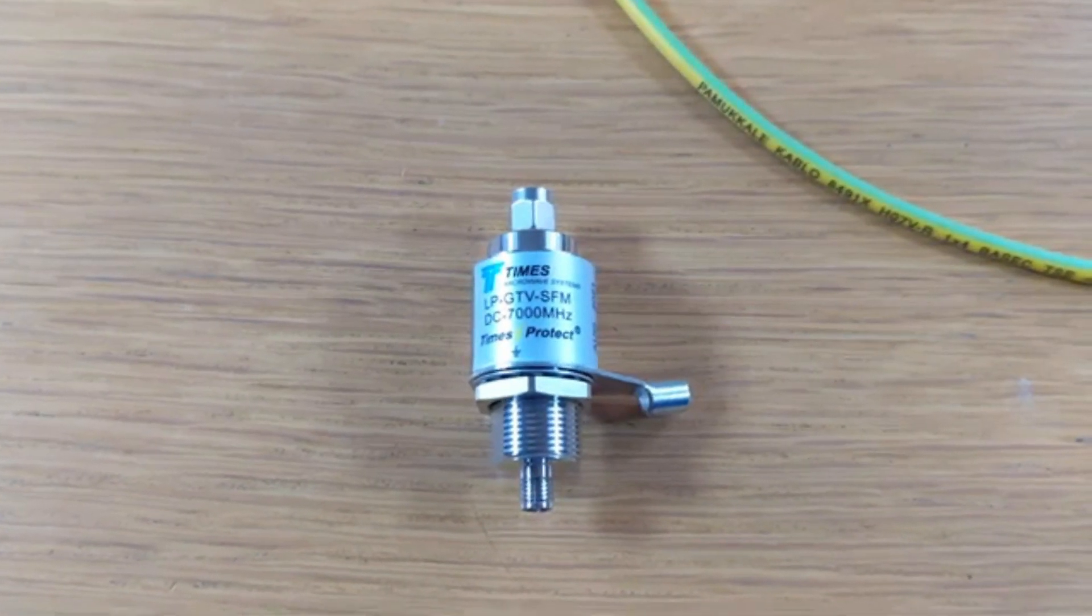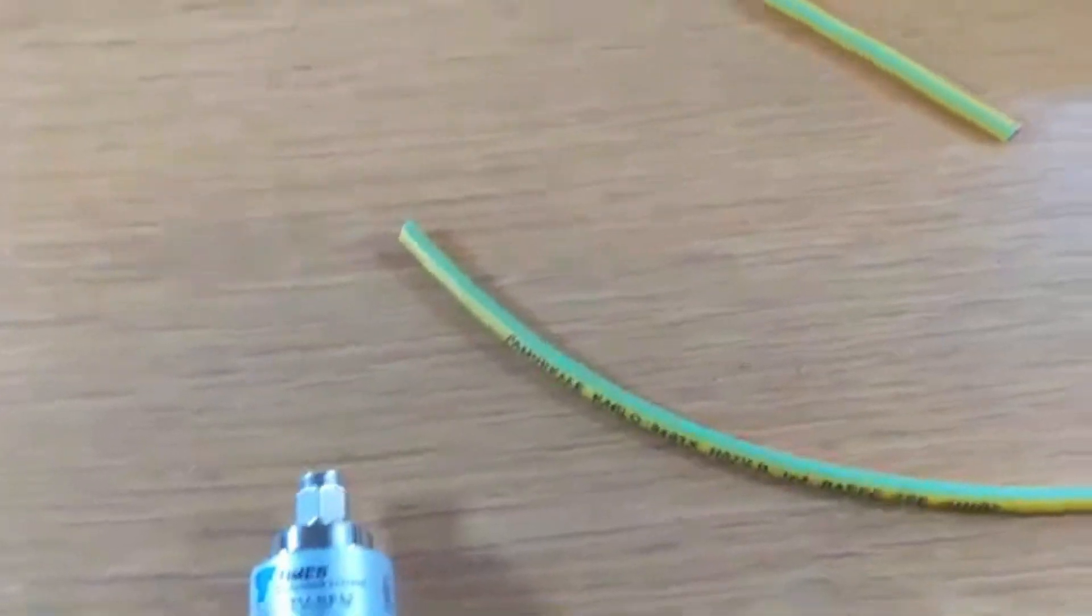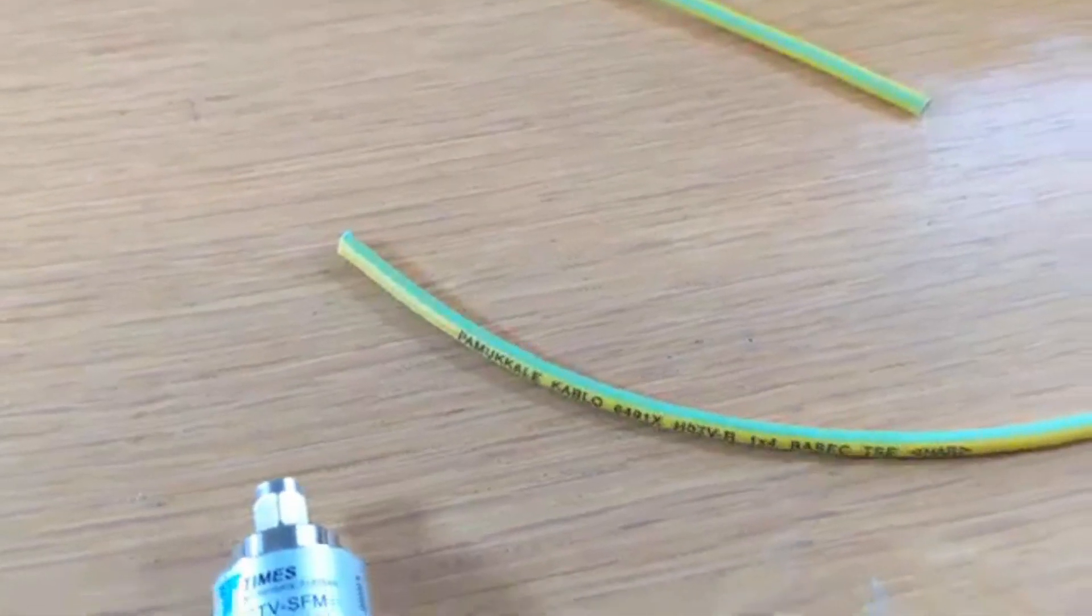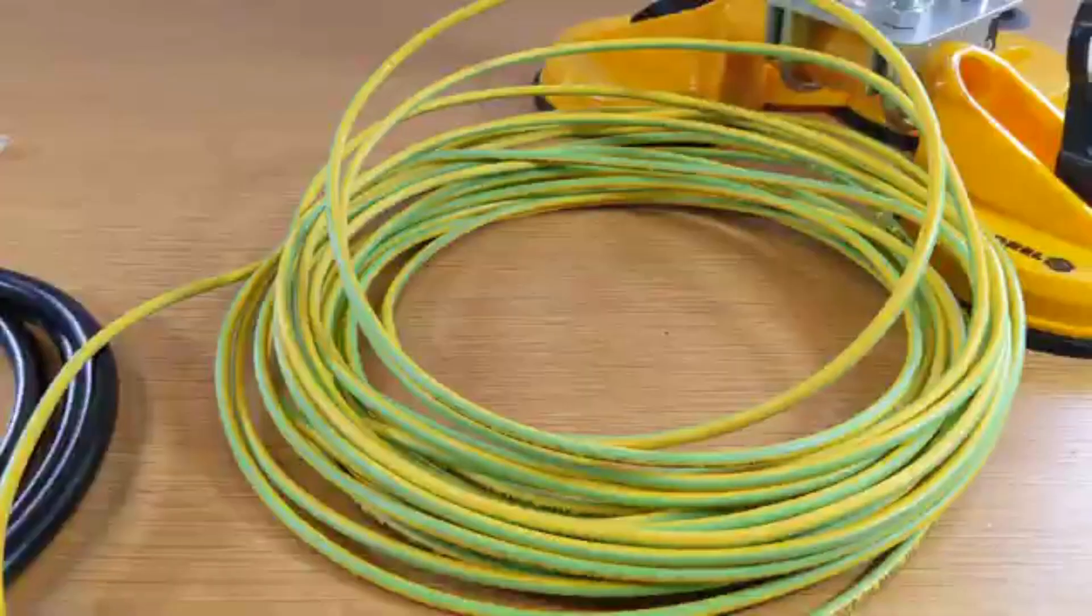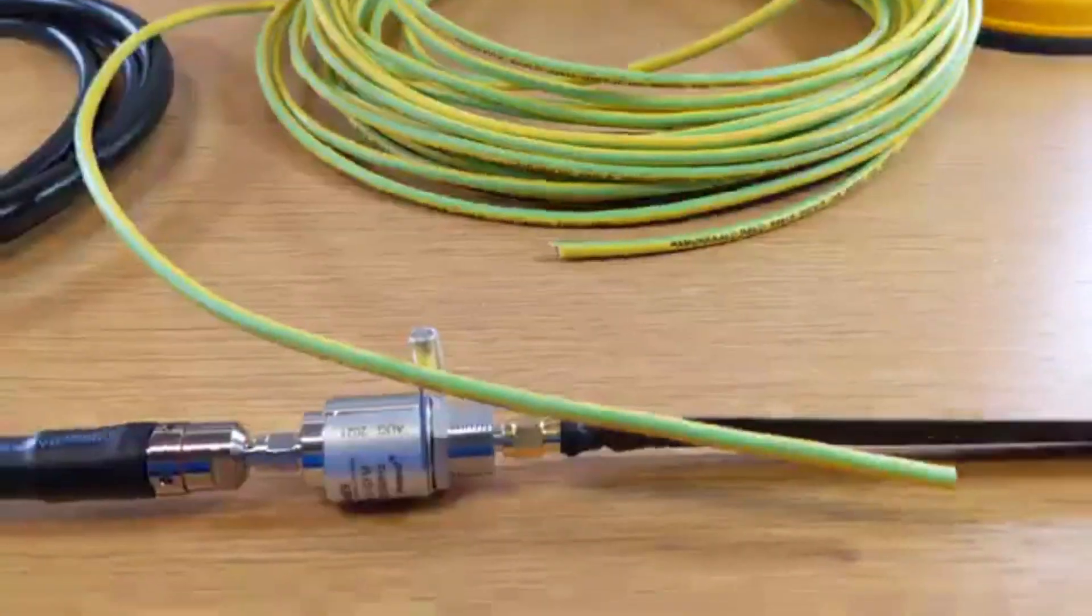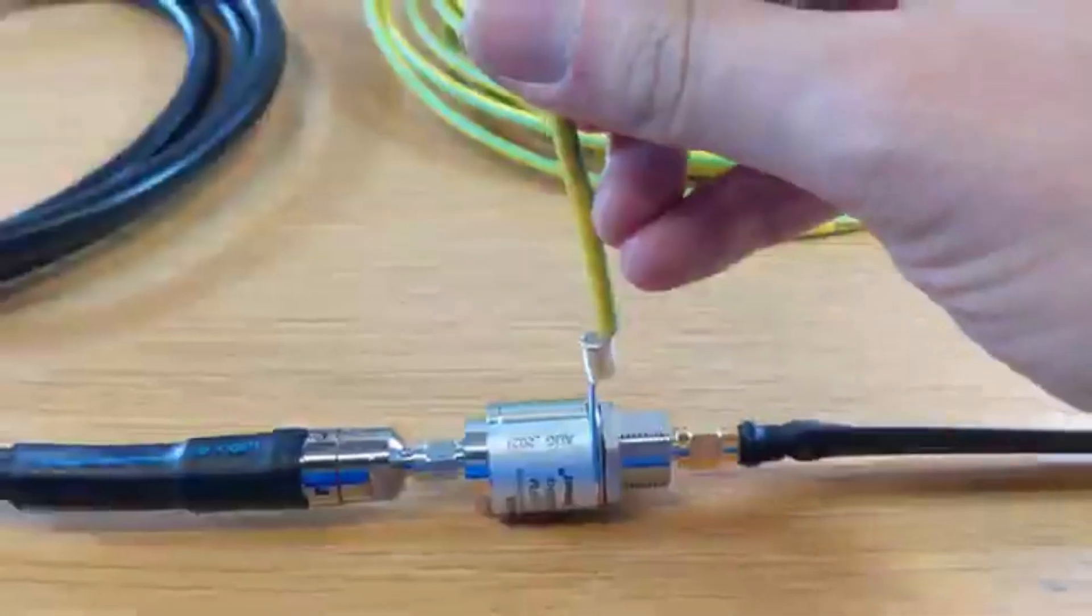Up next we have the lightning arrester kit. Just a note here that you don't actually put this on the antenna side. What I decided to do, based on the kit that was sent to me, was actually put it outside on the window pass-through cable. So this doesn't sit at the end of the antenna directly under it.